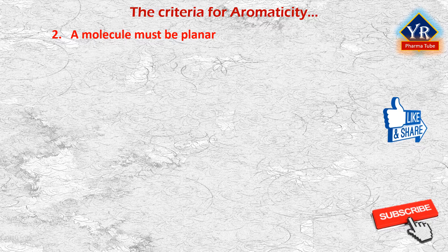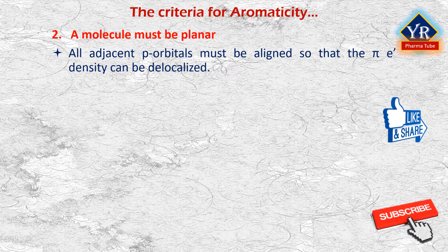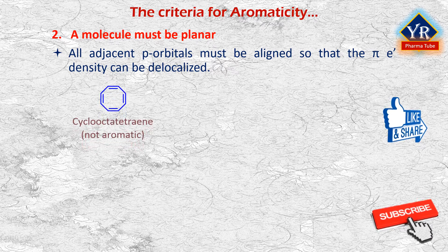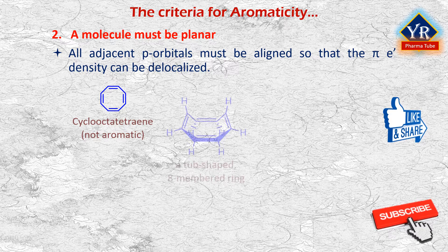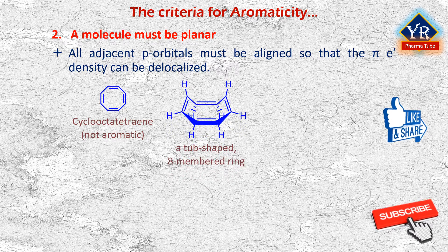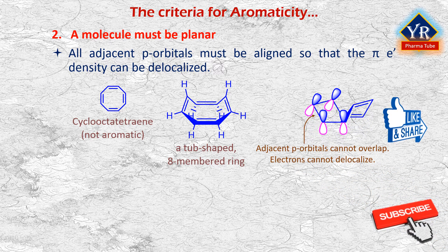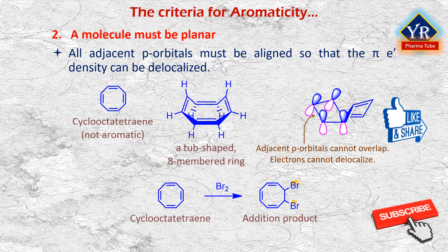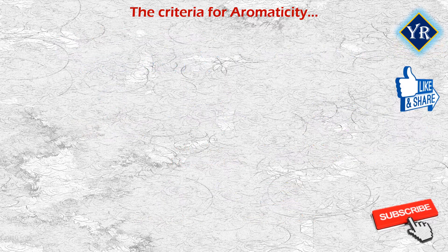Number two: a molecule must be planar. All adjacent p orbitals must be aligned so that the pi electron density can be delocalized. For example, cyclooctatetraene resembles benzene in that it is a cyclic molecule with alternating double and single bonds. However, it is a tub-shaped structure that is not planar, so overlap between adjacent pi orbitals is impossible. Therefore, cyclooctatetraene is not aromatic and it undergoes addition reactions like those of other alkenes.